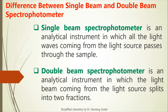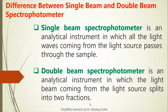Now we are going to see the differences between single beam and double beam spectrophotometer one by one. The first difference: in a single beam spectrophotometer, all the light waves coming from the light source directly pass through the sample, while in a double beam spectrophotometer, the light beam coming from the light source is split into two fractions.